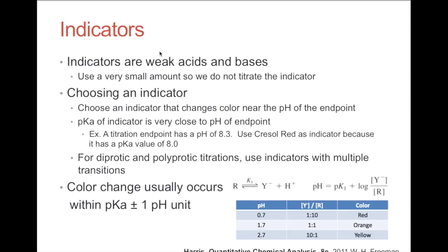Indicators are weak acids and bases themselves. We use a very small amount so that we do not titrate the indicator. We choose an indicator that changes color near the pH of the endpoint — the pKa of the indicator must be very close to the endpoint pH. For example, a titration with an endpoint pH of 8.3 would use Cresol red, which has a pKa of 8.0. For diprotic and polyprotic titrations, we use indicators with multiple transitions. Color change usually occurs within ±1 pH unit of the pKa.